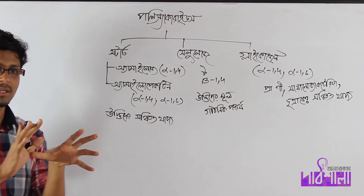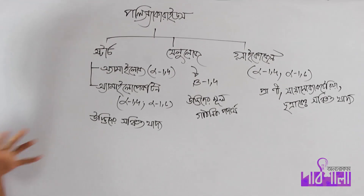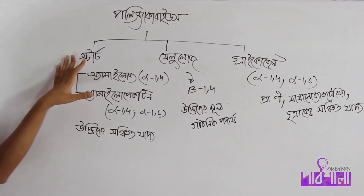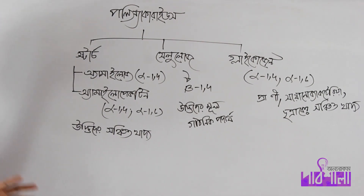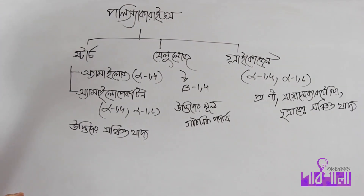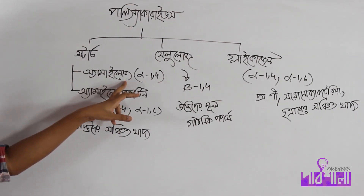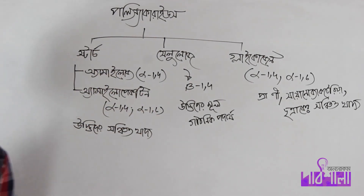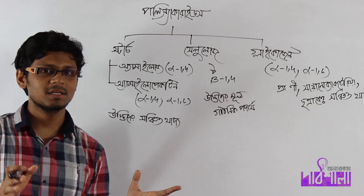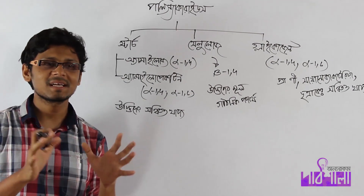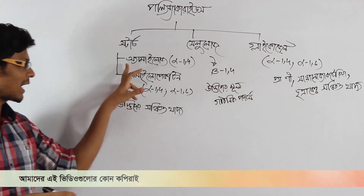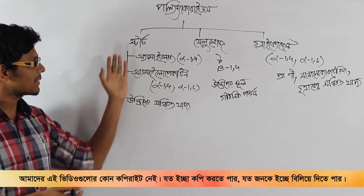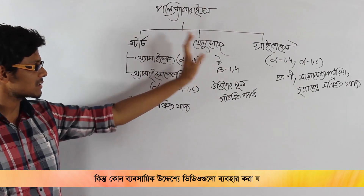It is important to know about starch. Starch is a polysaccharide and it has two types: amylose and amylopectin.